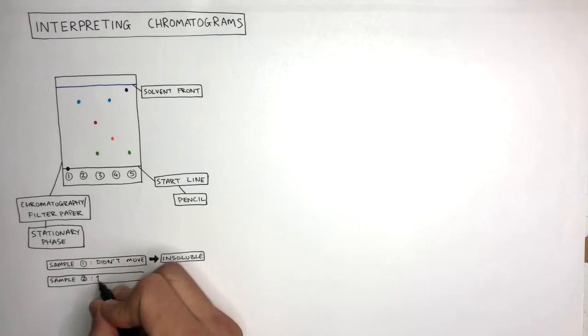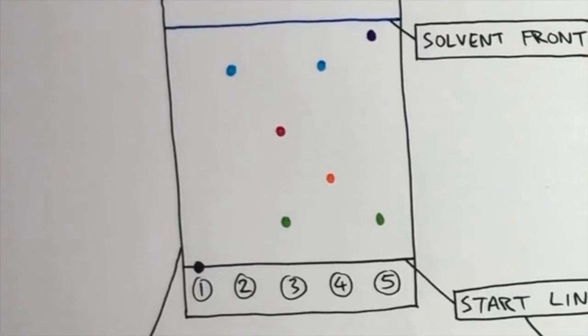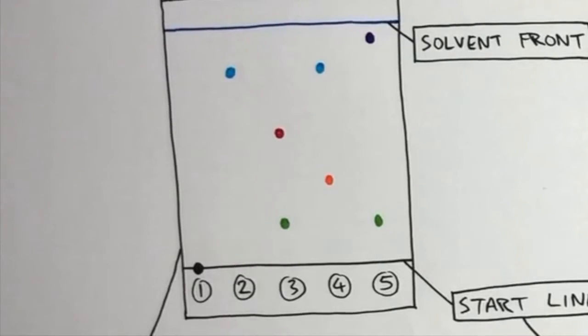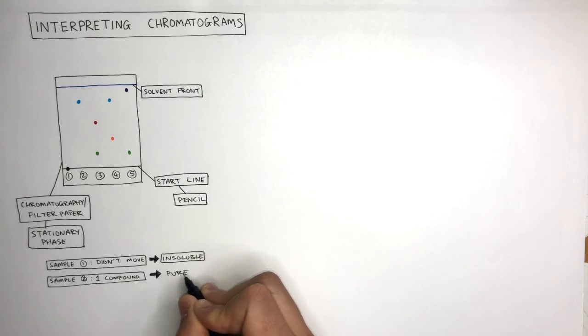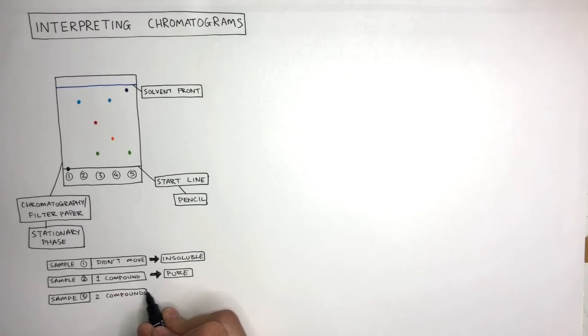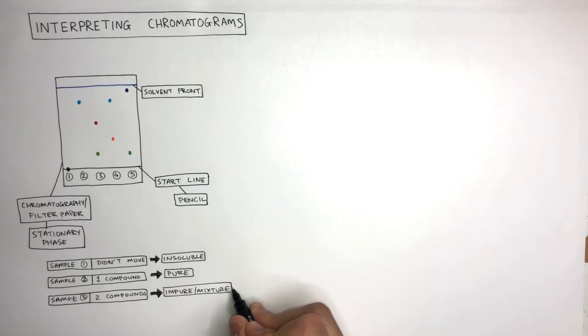Sample 1 contains only one compound as the chromatogram shows how there is one dot above the number 2. This means the sample is pure. A pure substance will always have one compound having risen from the start line. Sample 3 contains two compounds as there are two dots that have risen with the solvent. As there are two different dots, the sample is impure or it can be described as a mixture which is two different substances not chemically bonded.